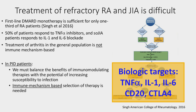Currently, treatment of arthritis is quite complicated. First-line disease-modifying anti-rheumatic drugs, or DMARDs, as monotherapy are sufficient for only one-third of patients. They generally move toward second-line therapies such as TNF-alpha inhibitors and IL-1 and IL-6 blockade. Importantly, treatment of arthritis in the general population is not immune mechanism-based — the decision to choose one drug over another is based on clinical trial evidence and isn't adjusted based on immune phenotype. In contrast, patients with primary immune deficiencies need to balance the benefits of immunomodulating therapies with the potential of increasing susceptibility to infection, so careful selection based on immune background is definitely needed.